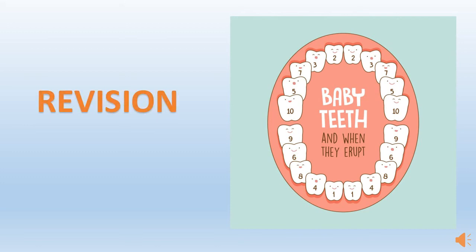Let's revise what we've covered. As you can see in this figure, I've denoted all the eruption sequences with numbering. First to erupt are the central incisors — usually upper then lower. Then the lateral incisors, either upper or lower side teeth. Then the first molars, then the canines, then the second molars. In general, the upper might come first, or sometimes the lower might come first.